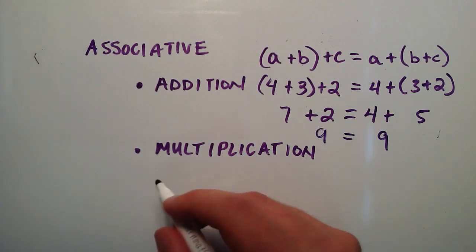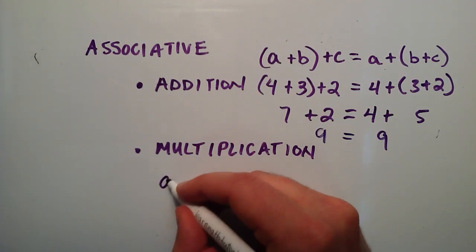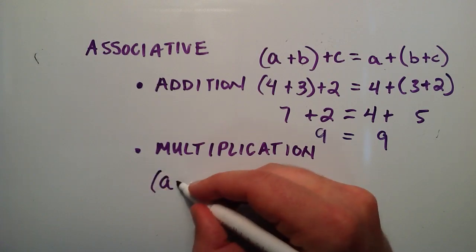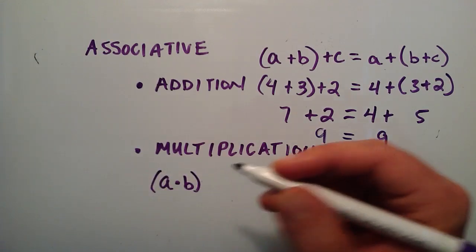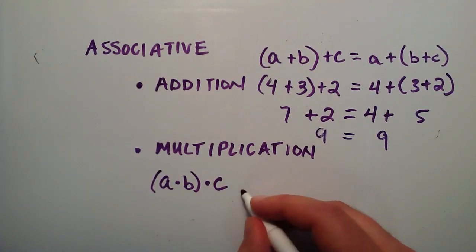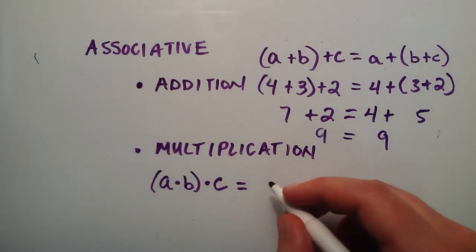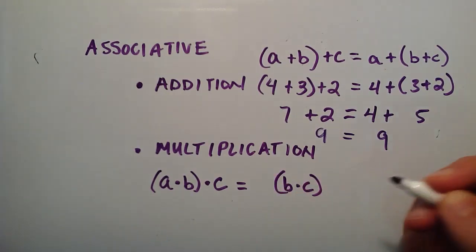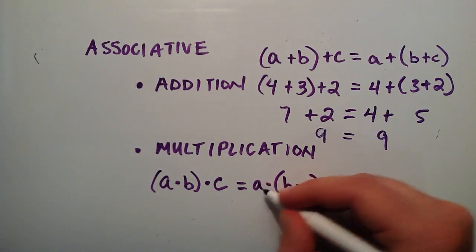The associative property of multiplication is similar. We can take some number A, multiply it by a number B, take that result, and multiply it by a number C. That should be equivalent to multiplying B times C first, and then multiplying that result by A.